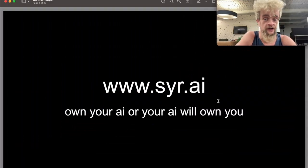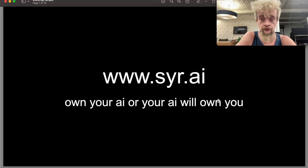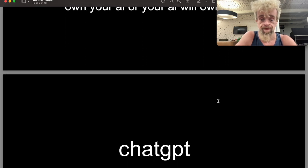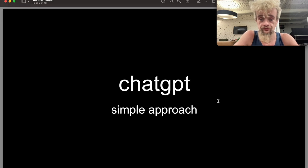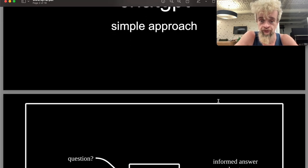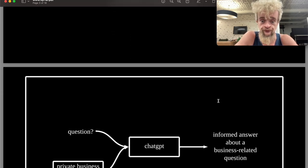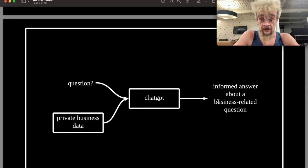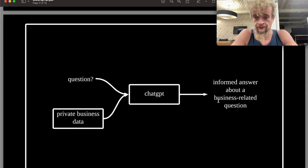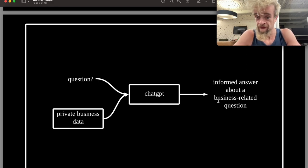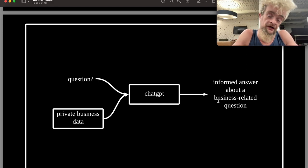Own your AI, or your AI will own you. The approach to ChatGPT looks simple: you can ask it a question, you can give it some private business data, and combined, it'll give an informed answer about a business-related question.